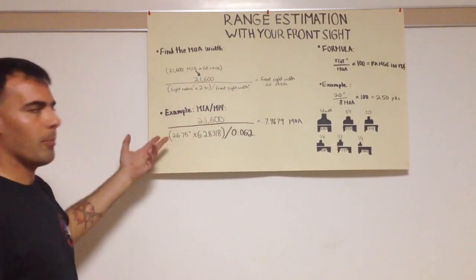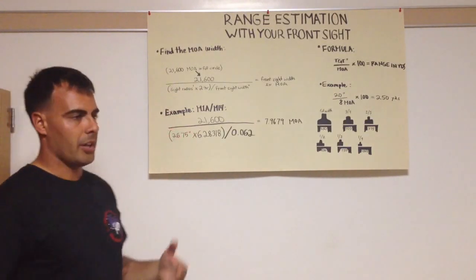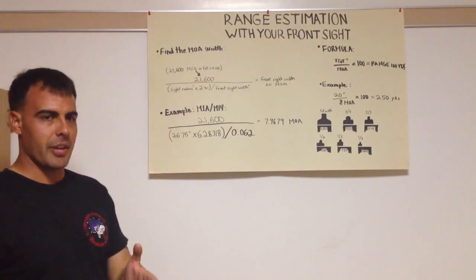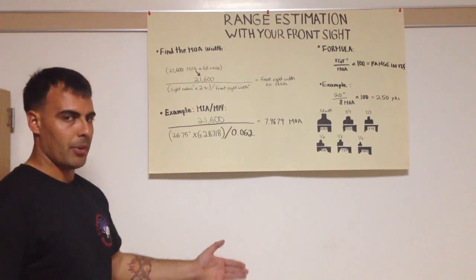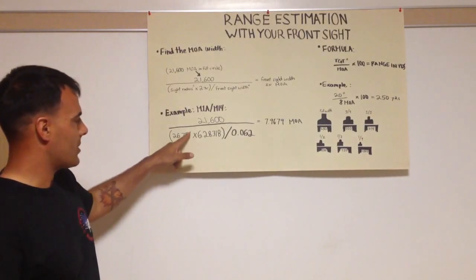So I'll take my M1A or an M14 with a national match front sight for an example. This is the full length barrel version. The sight radius, which is the distance from my front sight post or blade to my rear sight aperture for an M14, is 26.75 inches.